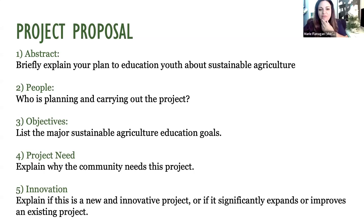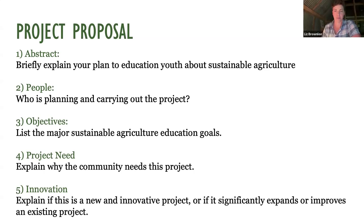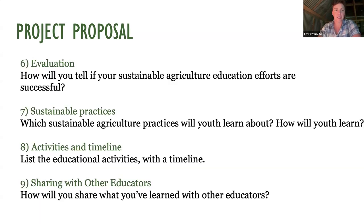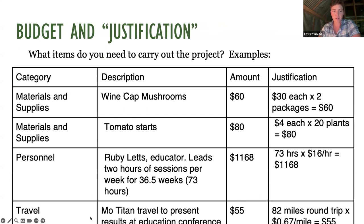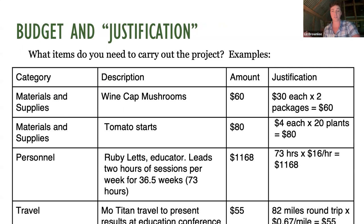The next question: can we pay for travel costs of partners participating in the grant? Yes, absolutely - you can include that as a line item in your budget. That could be travel to get farmers to your education space so they can present to your kids, school bus travel to get the kids to the farm or commercial kitchen, or travel for a partner to present at an education conference.